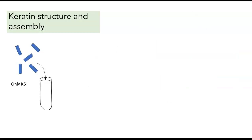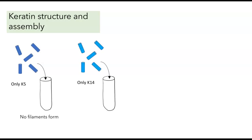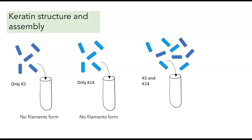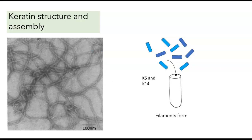In the early 1990s, researchers determined how keratins were assembled using in vitro experiments. If they put only an acidic keratin in a test tube, no filaments formed. If they put in only a basic keratin, no filaments formed. But if they put in a mix of both basic and acidic keratins and then collected the proteins from the solution, they found filaments. These filaments, shown in an electron micrograph, are about 10 to 12 nanometers in diameter, consistent with what we see in cells.